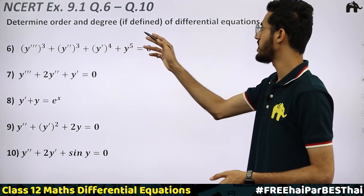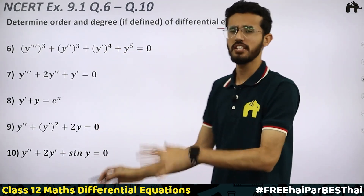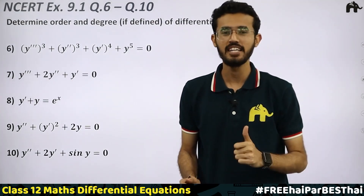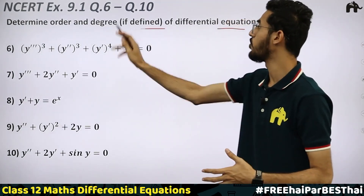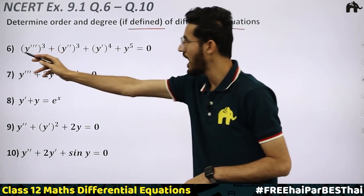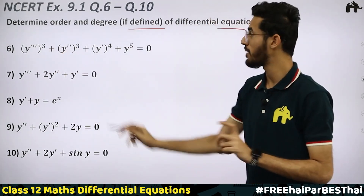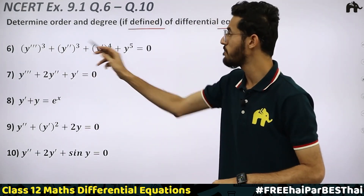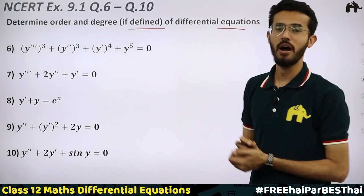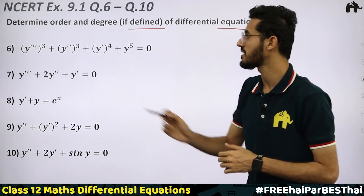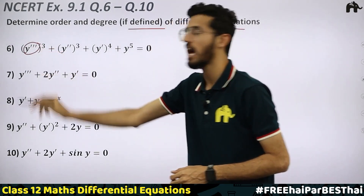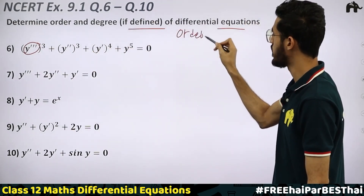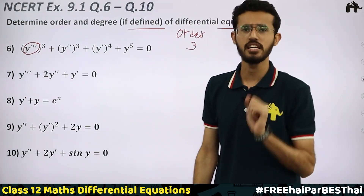Now let's look at the next set of questions — determine the order and degree, if defined, of differential equations from question 6 to 10. Question 6: (y‴)³ + (y″)² · (y′)⁴ + y⁵ = 0. The highest order derivative is y‴ (third order), so the order of this equation is 3.